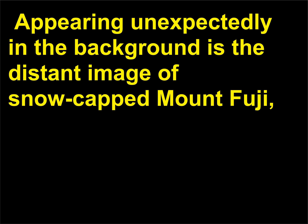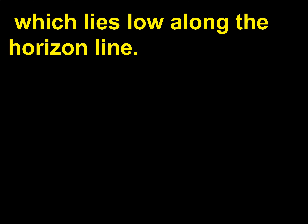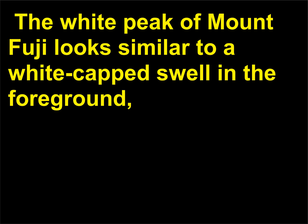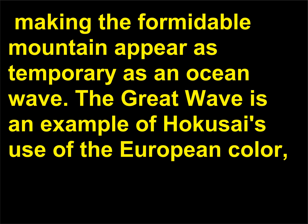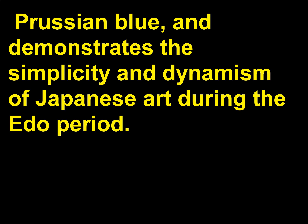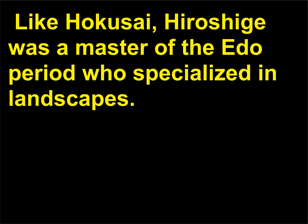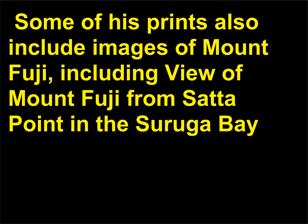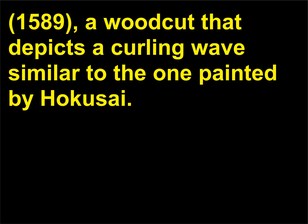Appearing unexpectedly in the background is the distant image of snow-capped Mount Fuji, which lies low along the horizon line. The white peak of Mount Fuji looks similar to a white-capped swell in the foreground, making the formidable mountain appear as temporary as an ocean wave. The Great Wave is an example of Hokusai's use of the European color Prussian blue, and demonstrates the simplicity and dynamism of Japanese art during the Edo period. Like Hokusai, Hiroshige was a master of the Edo period who specialized in landscapes. Some of his prints also include images of Mount Fuji, including View of Mount Fuji from Satta Point in the Suruga Bay, a woodcut that depicts a curling wave similar to the one painted by Hokusai.